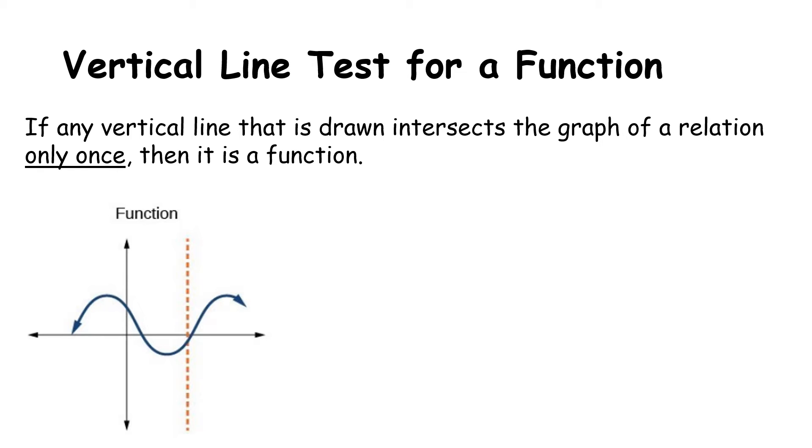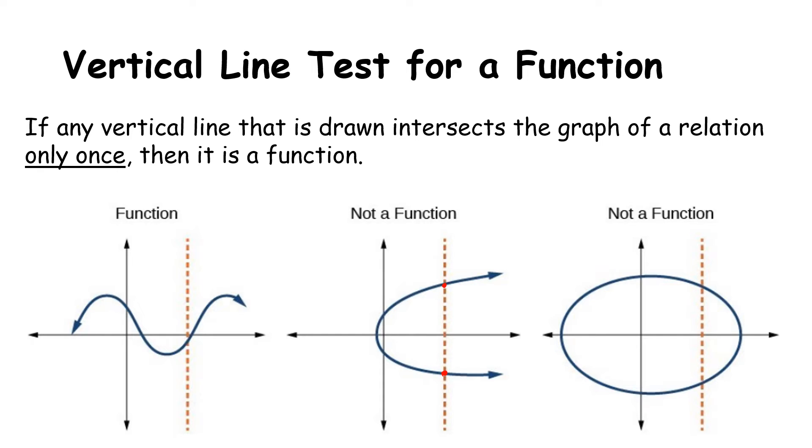Let's take this example here. This funny looking squiggle that you maybe don't recognize at this point and that's fine. But all we need to see is, is it a function? And the answer is yes, because there's no vertical line I can draw that will touch the graph more than once. This example here is not a function. The reason it is not a function is because when I draw this vertical line, it touches or intersects the graph twice. So it fails the vertical line test. This is also not a function because no matter what line I draw, I can see that there are some that will intersect this relation or graph twice. Therefore, it is not a function.